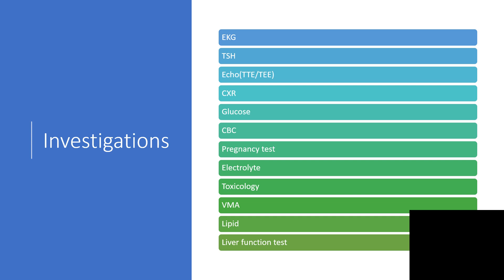Chest X-ray — even from the chest X-ray, you can see massive cardiomegaly, which might be the beginning of another diagnosis entirely. Glucose — a possible differential is hypoglycemia, so we do glucose to know if this patient is non-hypoglycemic. Complete blood count to rule out anemia.